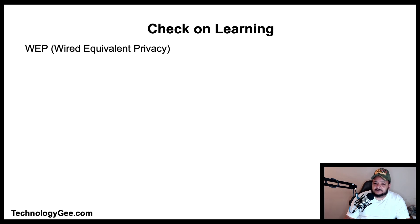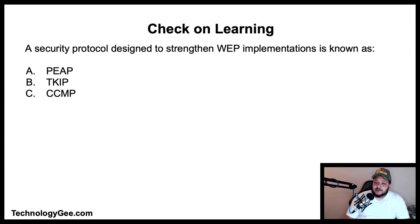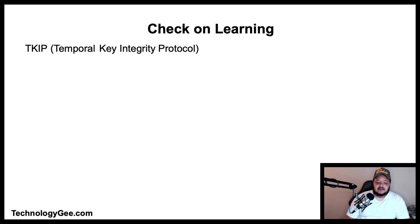Question two: a security protocol designed to strengthen WEP implementations is known as what — PEAP, TKIP, CCMP, or WPA2? The correct answer is TKIP, or Temporal Key Integrity Protocol.